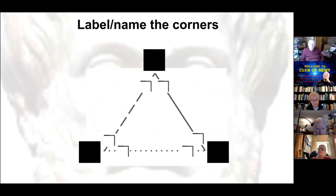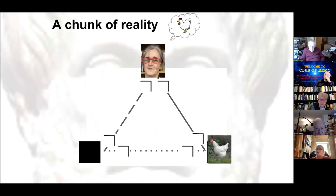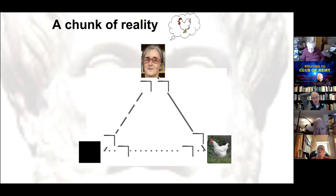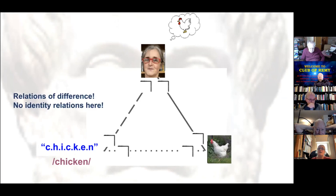The triangle says there is always a human being — I'm just using myself to keep it simple. When human beings communicate, we have a language because we're communicating about something. I use the example of a chicken: if I create the intention to communicate, I imagine a chicken. But to communicate about the chicken I need a linguistic sign, a language. What I show here is that there is no relation of identity involved — these are all relations of difference.